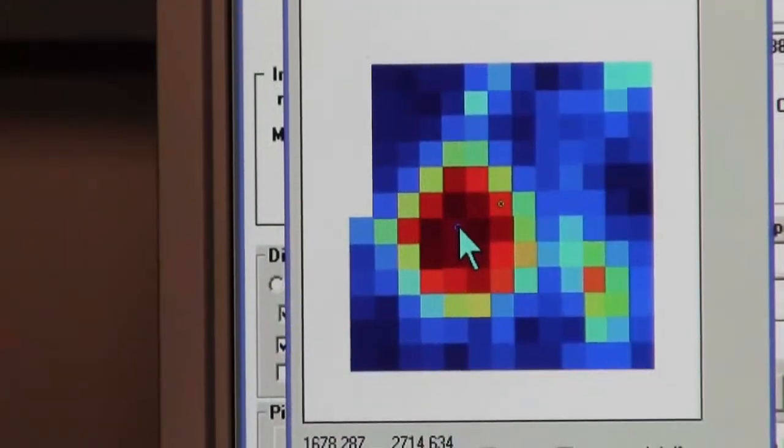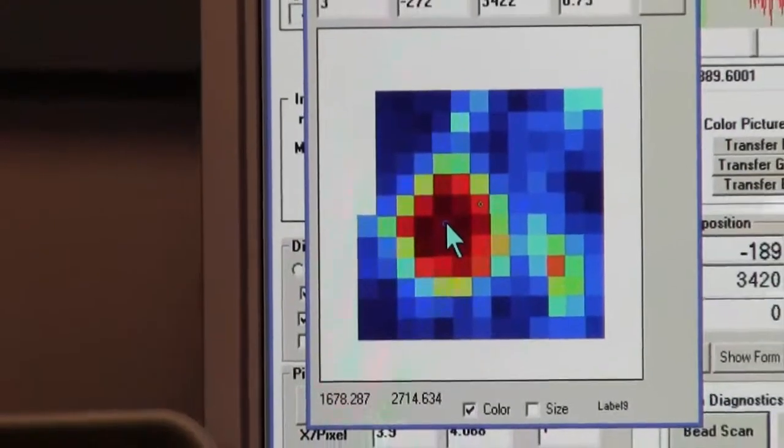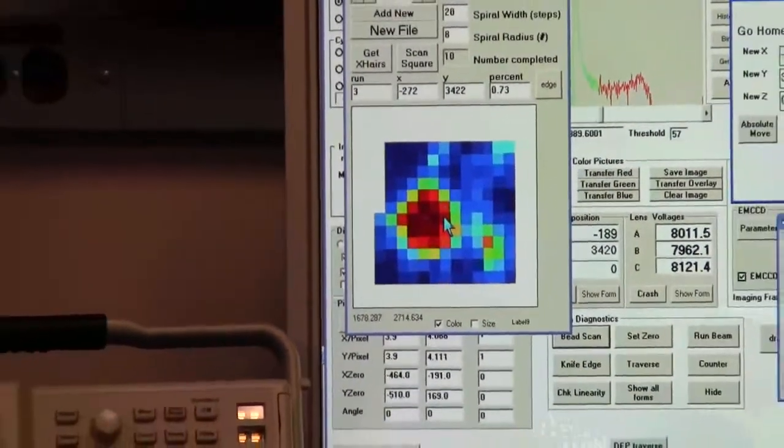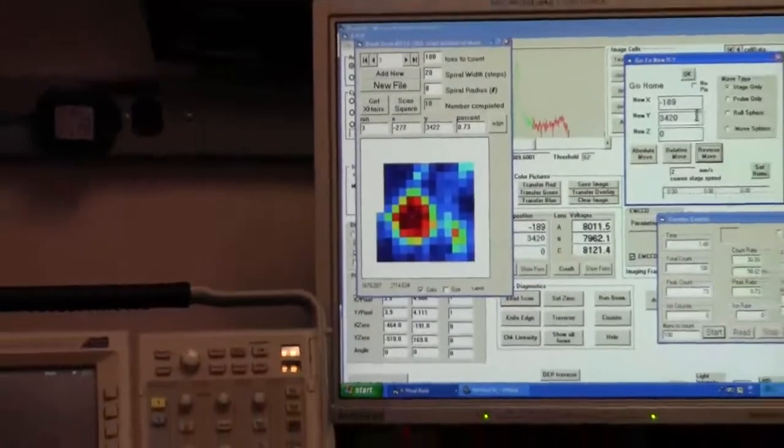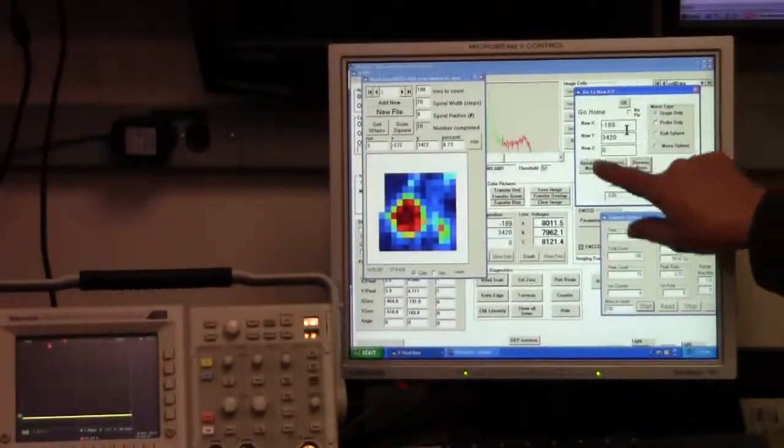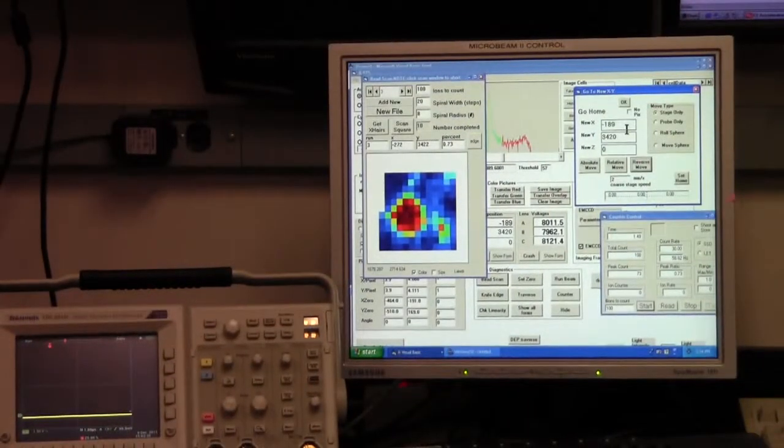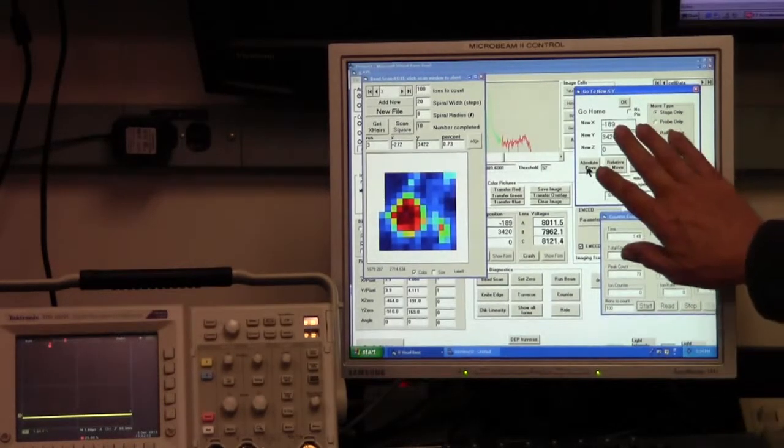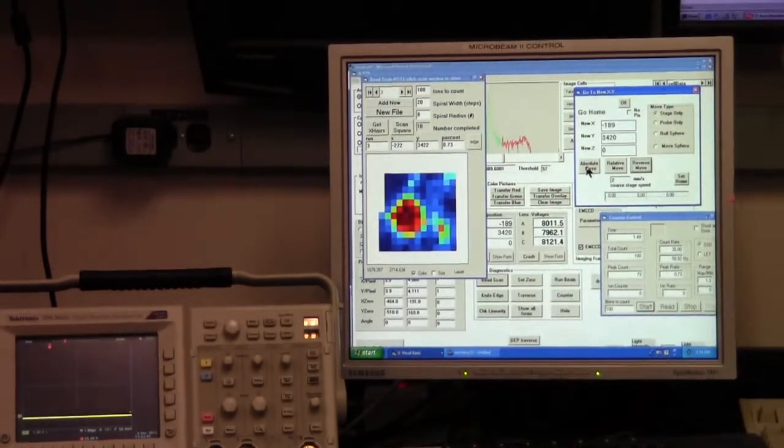When I mark the center of this bead with a cursor the computer calculates how far it has to move the bead in order to center it on the screen and it has transferred those coordinates to this screen for this form and when I tell it to make an absolute move to that position the bead is now centered over the beam.